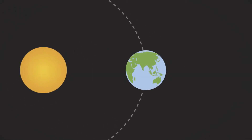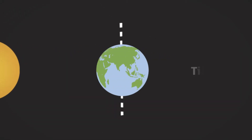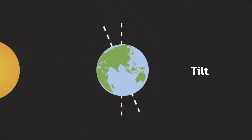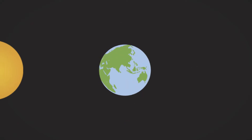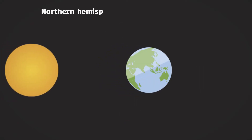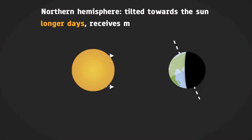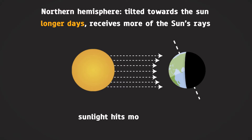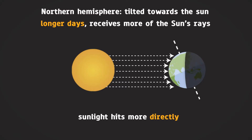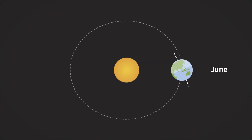The real cause of seasons is the tilt of Earth's rotational axis relative to the plane of revolution. When the northern hemisphere is tilted towards the Sun, it has longer days, receives more of the Sun's rays, and the sunlight hits more directly. This happens around June every year when the northern hemisphere has summer and the southern hemisphere has winter.